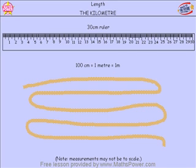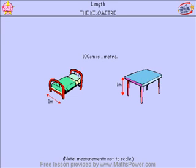If you made a long line of three 30 centimetre rulers by putting them end to end, you would make 90 centimetres altogether, which is just 10 centimetres short of 1 metre. 100 centimetres or 1 metre is approximately the width of a single bed and approximately the height of most tables.